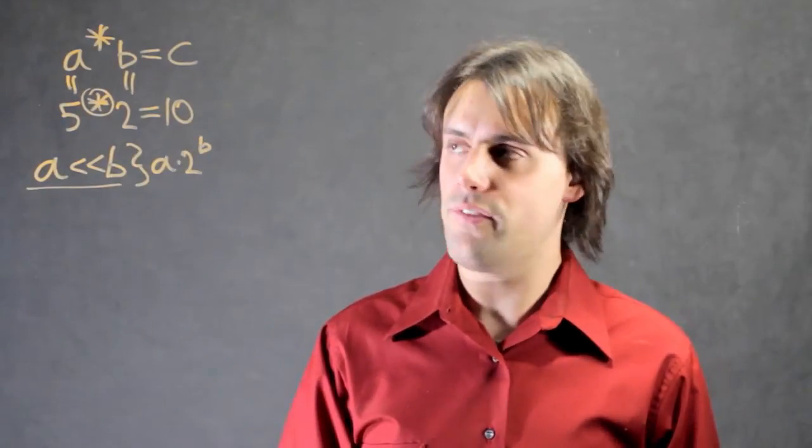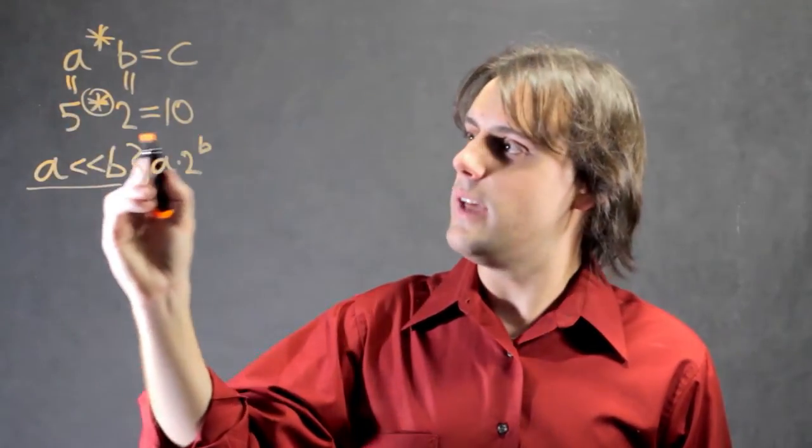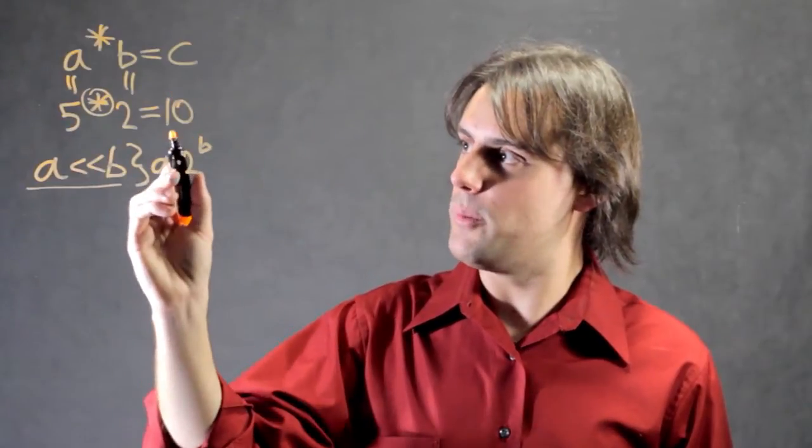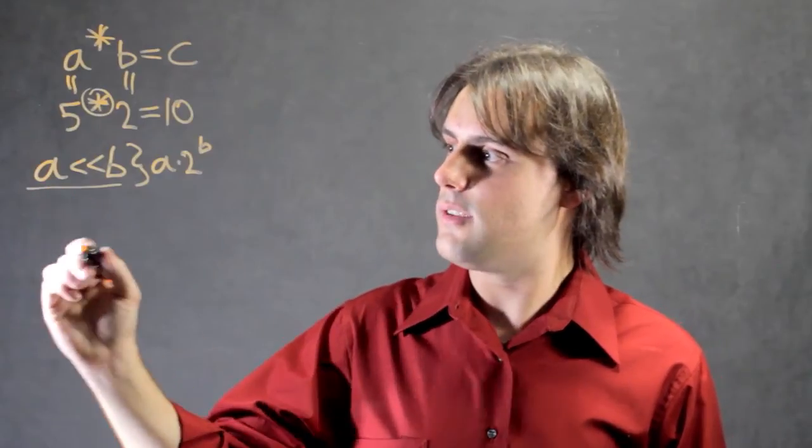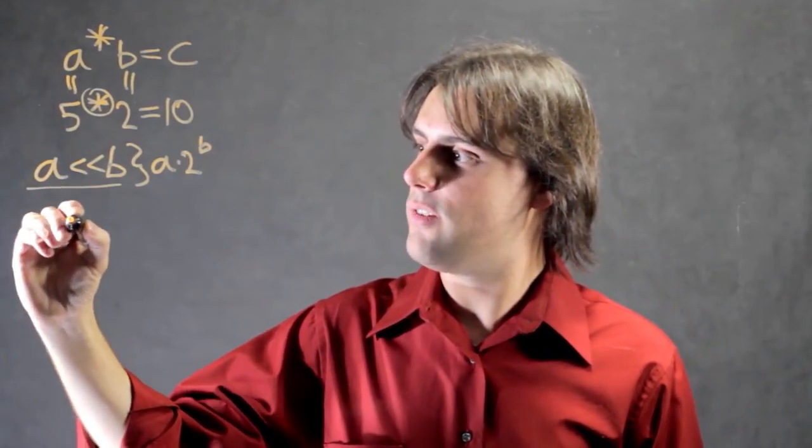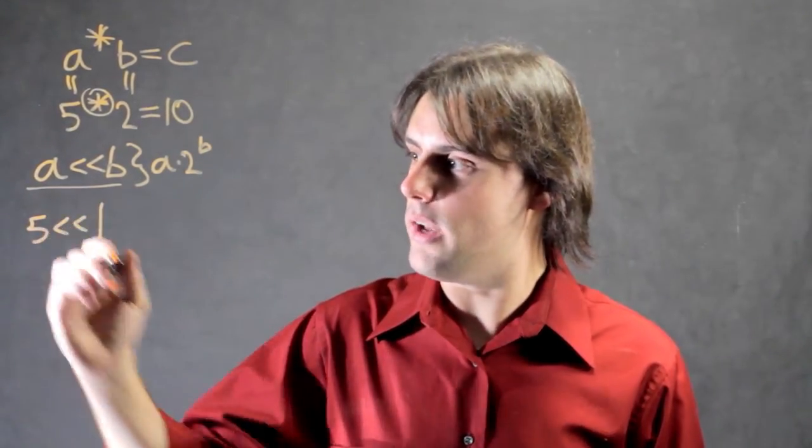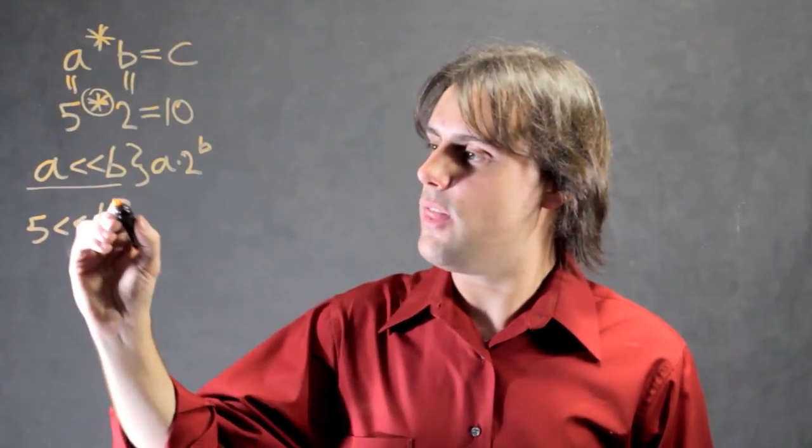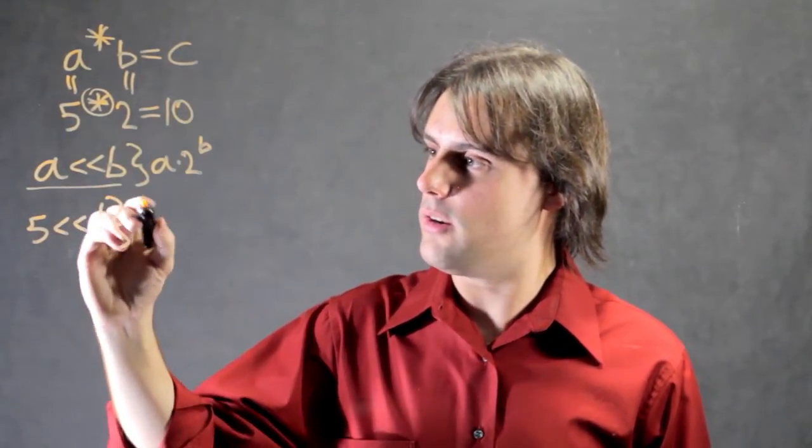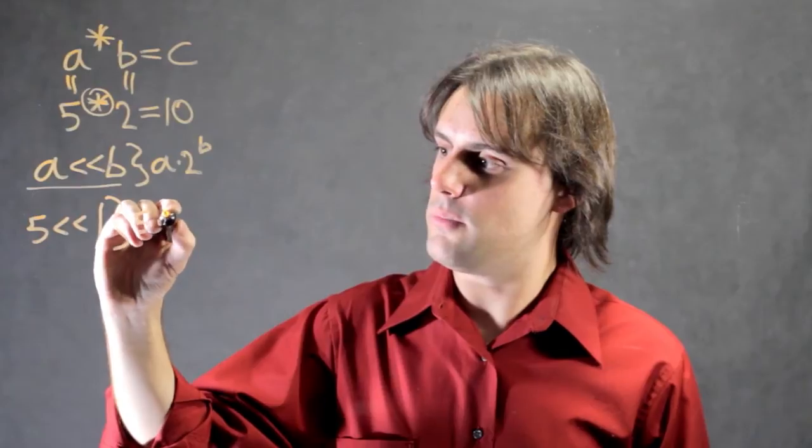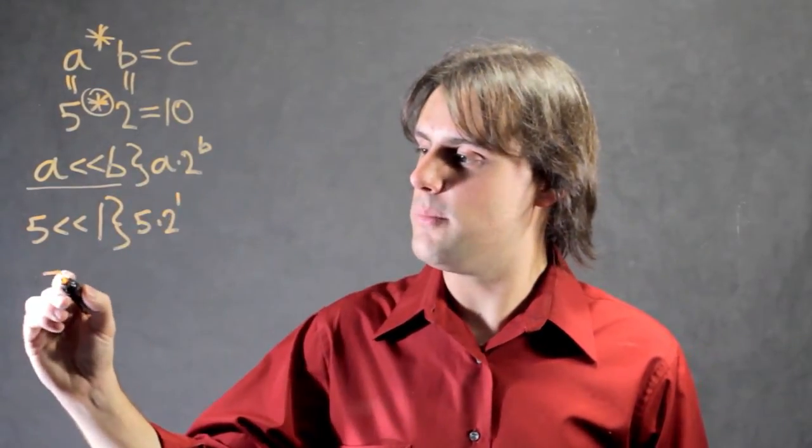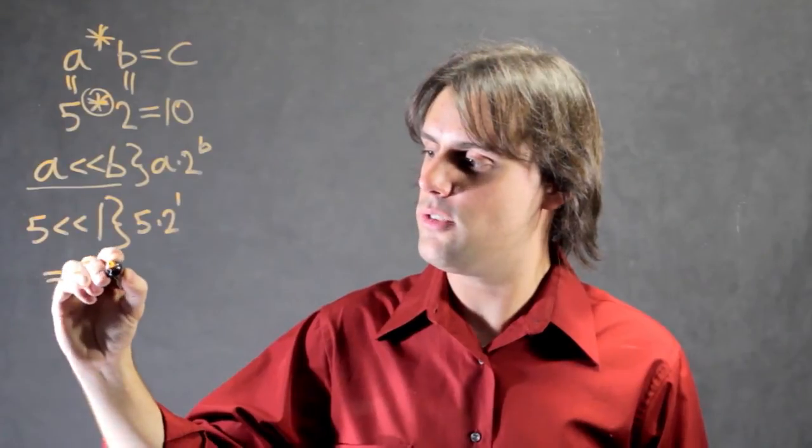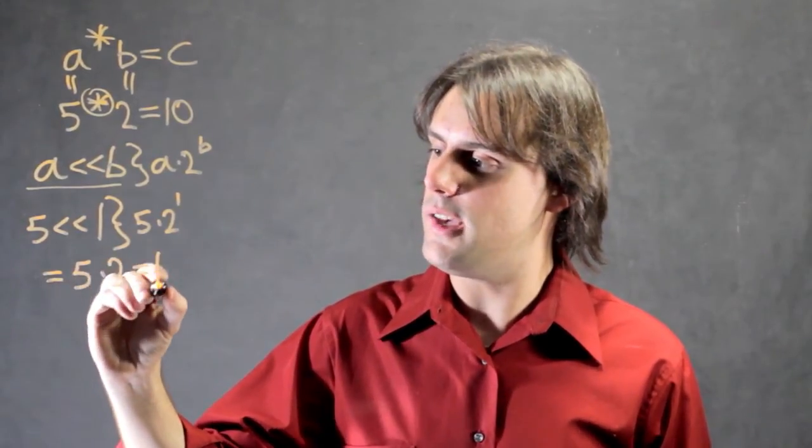So if I wanted to demonstrate this form of multiplication with this example, 5 times 2 equaling 10, I can simply write 5 less than less than 1. This would mathematically correspond to 5 times 2 raised to the power 1, which is simply equal to 5 times 2, which is equal to 10.